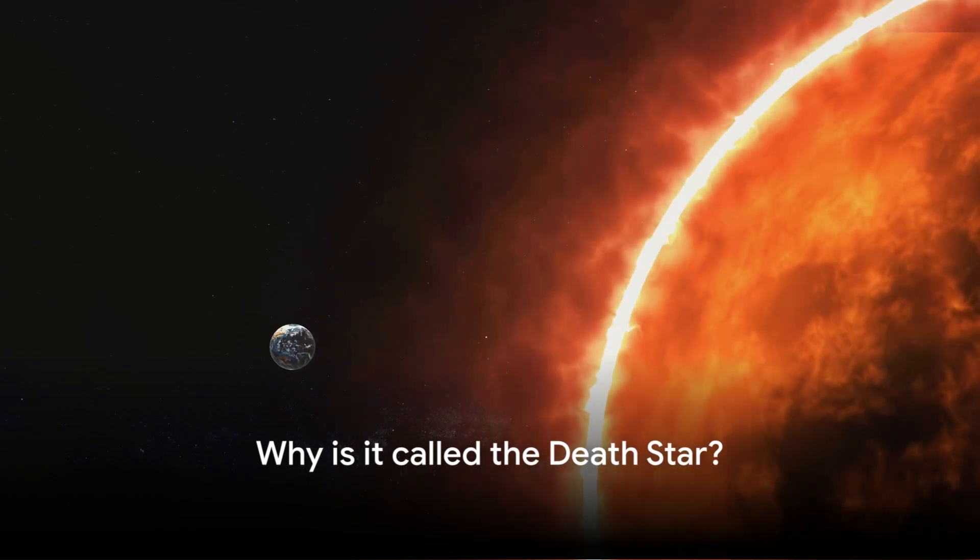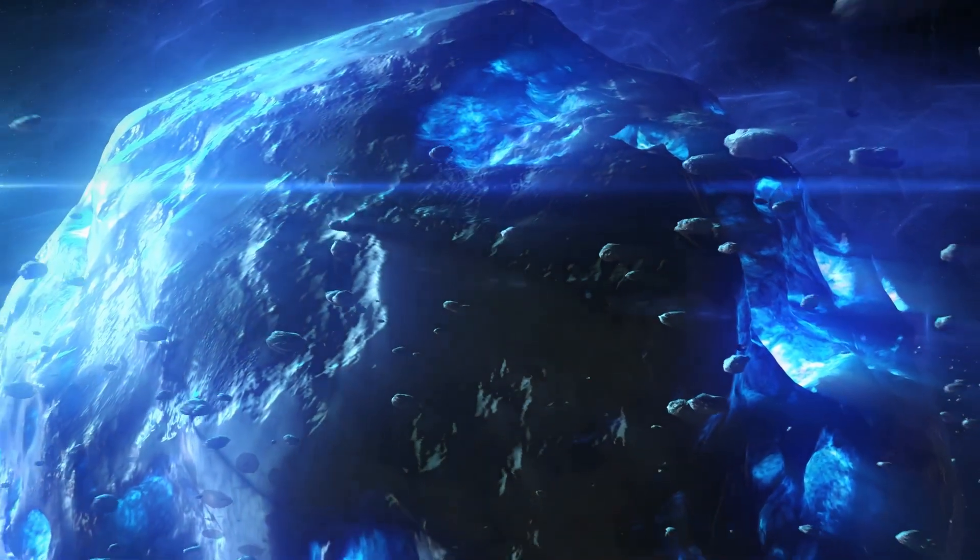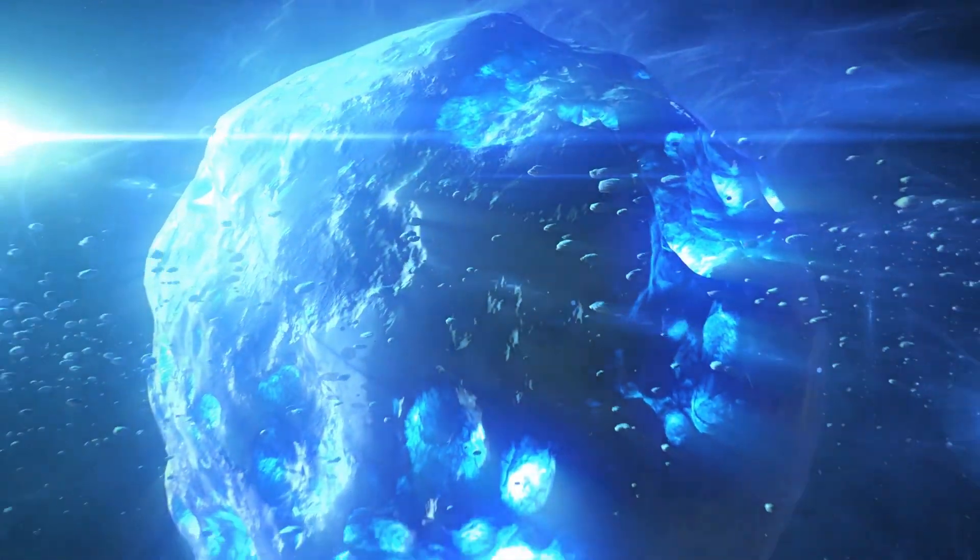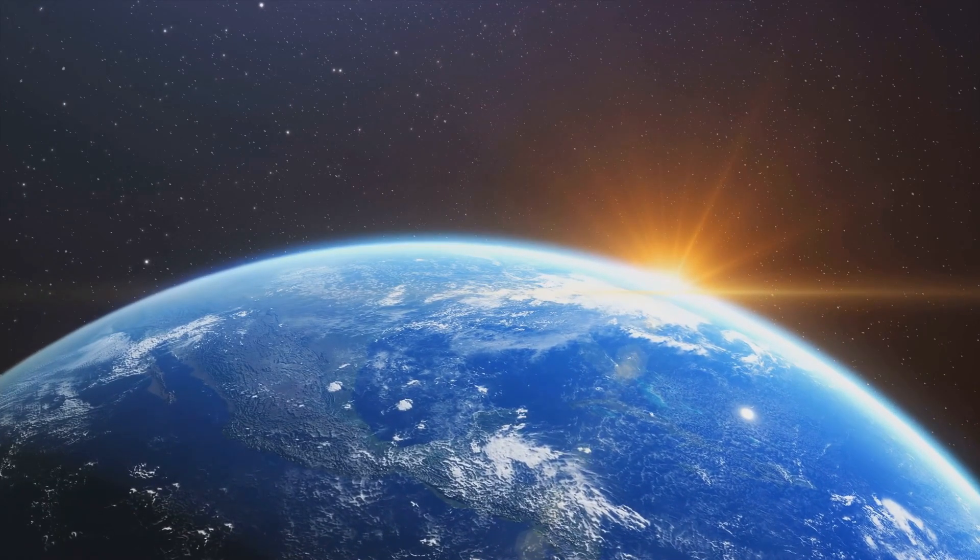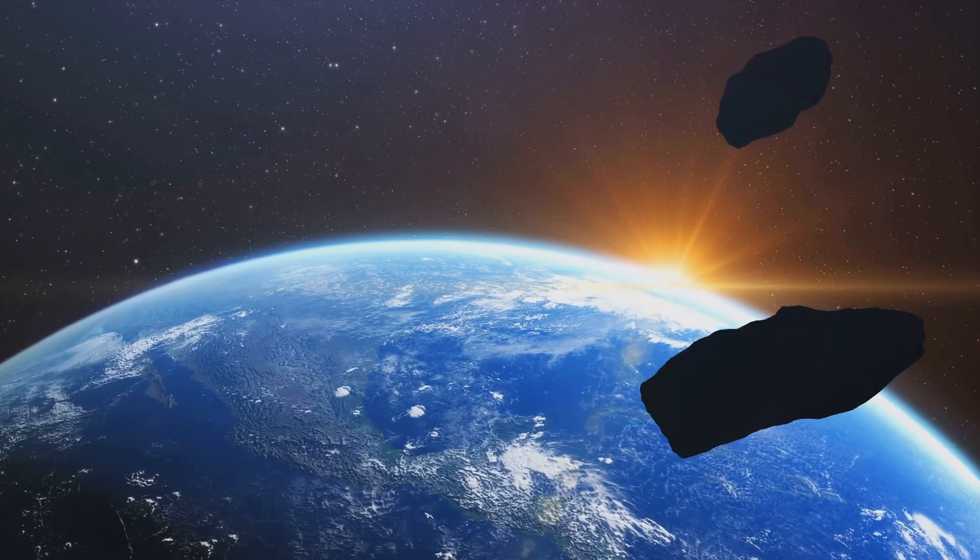Now you might be wondering why it's called the Death Star. Well, it's because of its potential to cause mass extinctions here on Earth. Imagine a second Sun, but instead of providing light and warmth, it creates chaos.